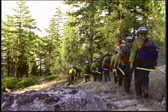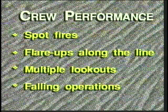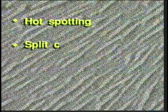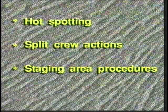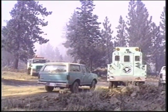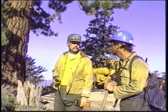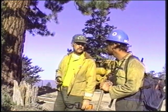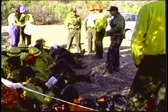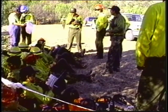Crew performance depends on the use of subordinate supervisors to handle specific operational problems relating to spot fires, flare-ups along the line, multiple lookouts, falling operations, hot spotting, split crew actions, and staging area procedures. Hand crews are often assigned to staging areas during operational periods to resupply, feed, and temporarily rest. The crew boss must check in and report directly to the staging area manager. Staging area procedures require a three-minute getaway response time. To accomplish this, the crew must remain organized and readily available.